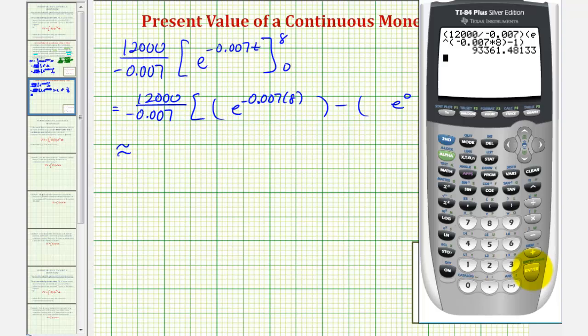To the nearest cent, this would be $93,361.48.